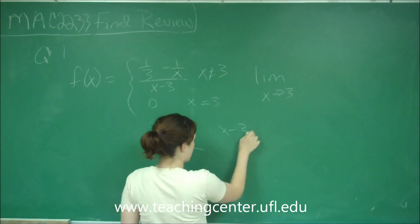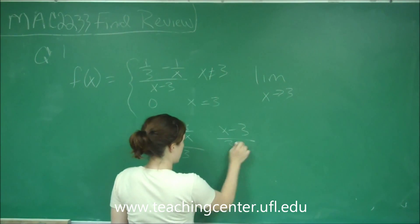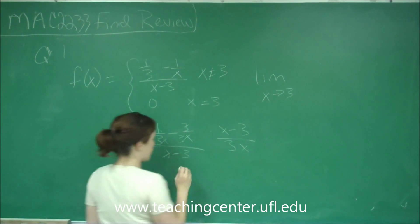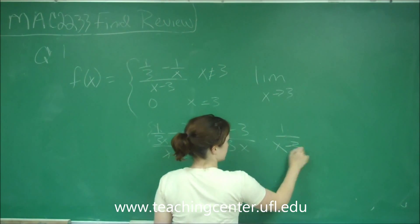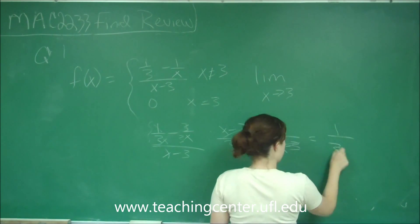So I get x minus 3 over 3x divided by x minus 3, which is the same thing as multiplying by 1 over. So it cancels out and I get 1 over 3x.